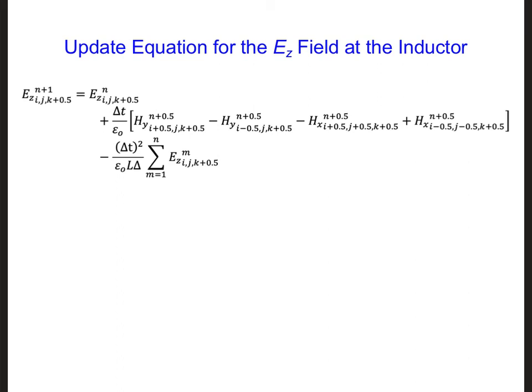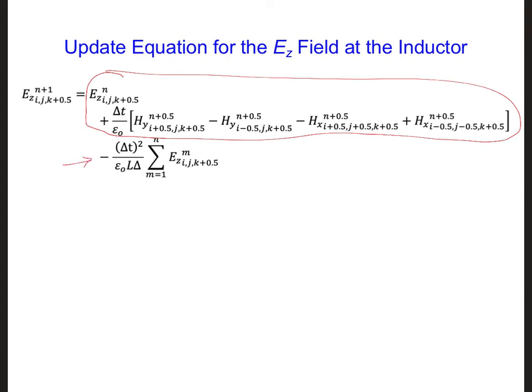In other words, we have a regular update of the ez component at the location of the inductor. This part is just a regular update. The only difference is that we need to add on — or in this case, since there's a minus sign, subtract — this extra term.